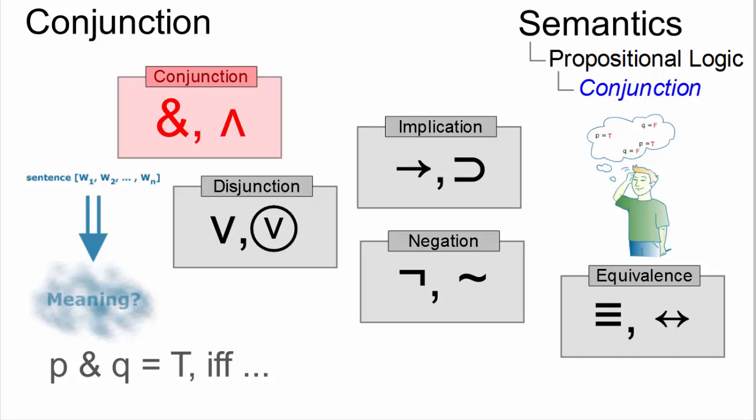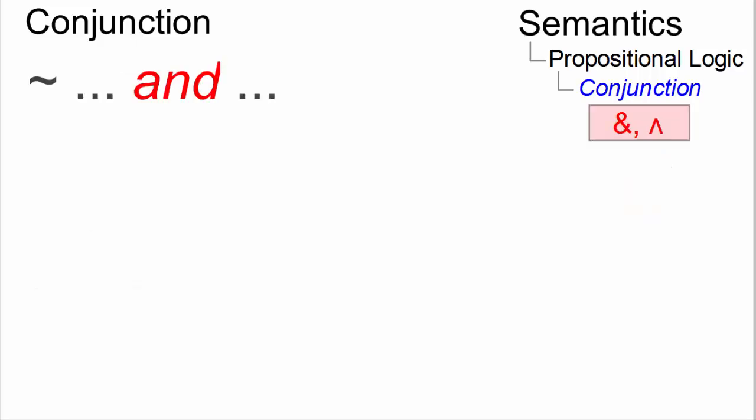The conjunction closely resembles AND in natural language and is alternatively symbolized by the ampersand symbol or by a turned V.